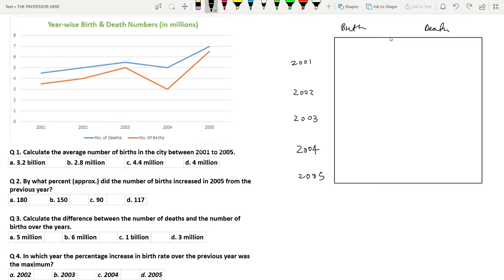So let's fill up the birth column. So according to the line chart given, the number of birth in 2001 is 3.5. So in 2001, it is 3.5 million. In 2002, it rises up to 4 million. In 2003, it rises to 5 million. In 2004, it decreases to 3 million. And in 2005, it goes up to 6.5 million.